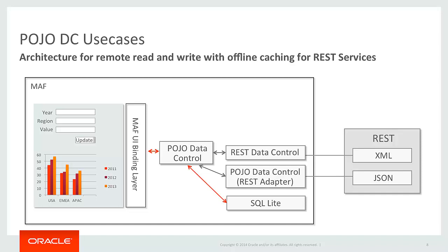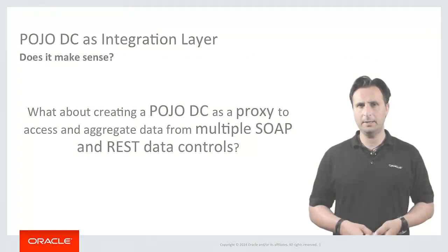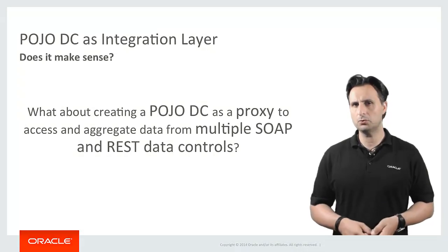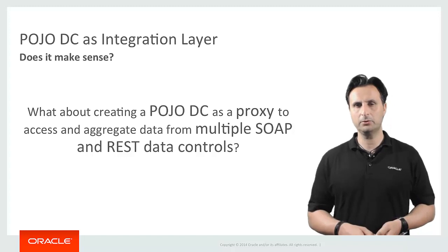Similarly, for RESTful service approaches, we can save data in a SQLite database, read it there, update it there, and eventually pass it back to the service. So using the Pojo Data Control as an integration layer sounds like a good idea.